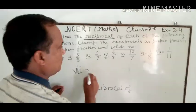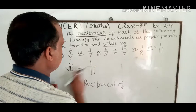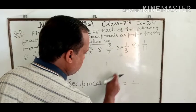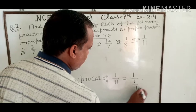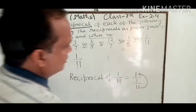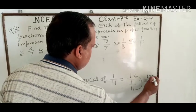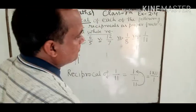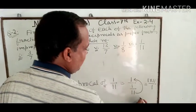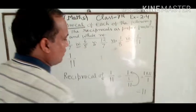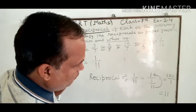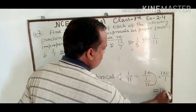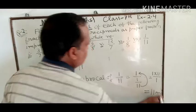Seventh part: 1 upon 11. Reciprocal of 1/11 equals 1 upon (1 upon 11). अब 11 ऊपर चला गया, तो 1 into 11 upon 1 = 11. नीचे वाले 1 की कोई value नहीं — because multiplying any number by 1 gives the same number. So 11 is your answer for the last, 7th part.